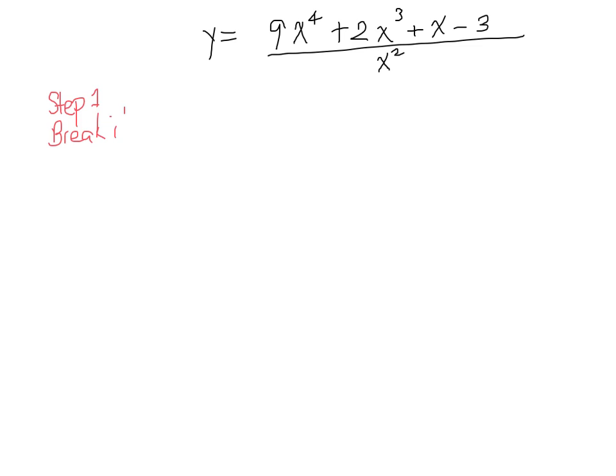Which means everything in this particular example is actually over x squared. So, we're not differentiating anything yet, so let me get rid of that. So, y is equal to 9x to the 4th over x squared, because everything is over x squared as we can see. Next part says plus 2x to the 3rd over x squared, minus x, you guessed it, over x squared, minus 3, over x squared. So everything is over x squared.